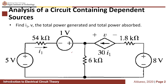For the next example, we have a similar one to the last example. We need to find I1, the total power generated, and the total power absorbed. For this example, we have a current-controlled current source, which has a value of 30I1. The value of this current source depends on the current I1.